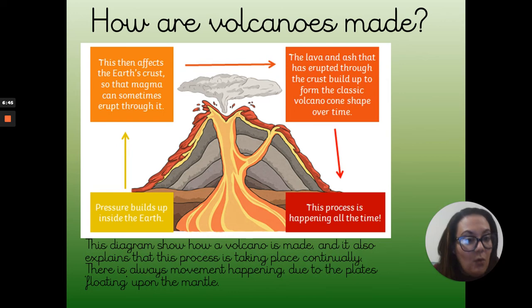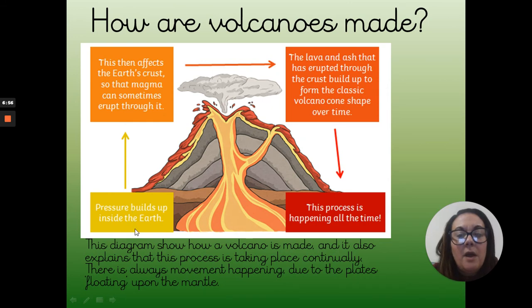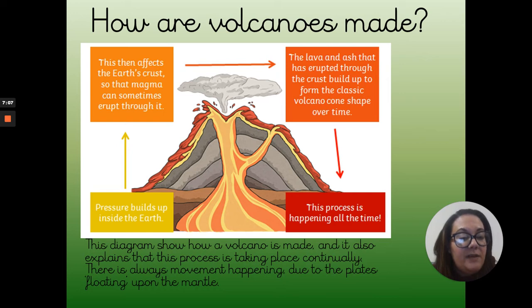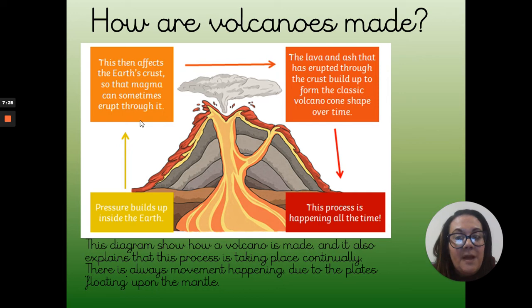How are volcanoes made? This diagram shows how a volcano is made and explains that the process is always happening. There's always movement happening due to the plates floating upon the mantle. We start with pressure building up inside of the earth. Imagine a fizzy bottle being shaken and shaken — when you take that lid off, it goes everywhere because the pressure has built up and it needs to escape. That's a great comparison with a volcano: it's about pressure needing to escape. This pressure affects the earth's crust so that magma can sometimes erupt through it. That word 'erupt' tells us straight away that we are starting to talk about volcanic activity.